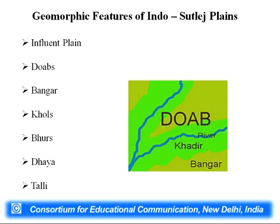Other geomorphic features of the Indus-Satlaj plain, apart from Doabs and Bangar, include large numbers of Khols, Bhurs, Dhayas, and Talis. These are the hydrogeomorphic features of the Indus-Satlaj plain. In the lower part, one can find the delta region, but the larger area is covered with the Bangar region.